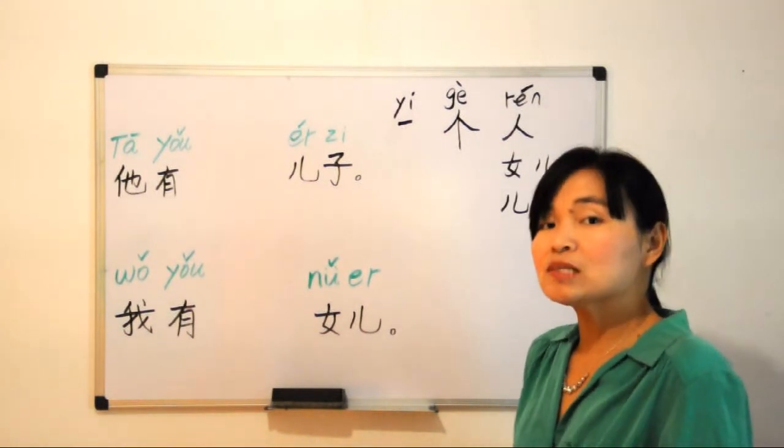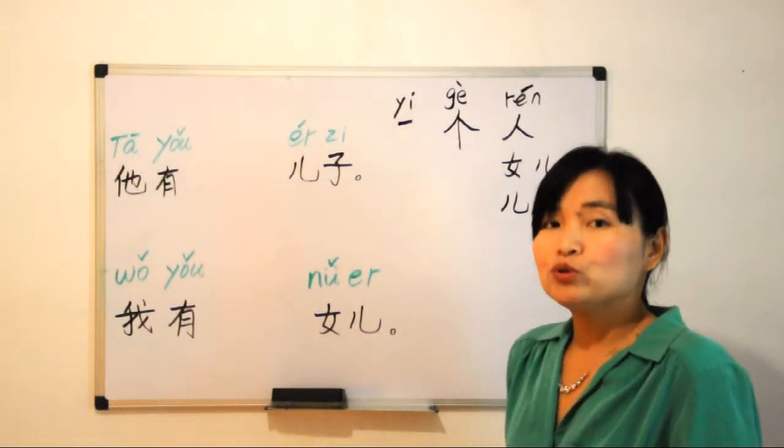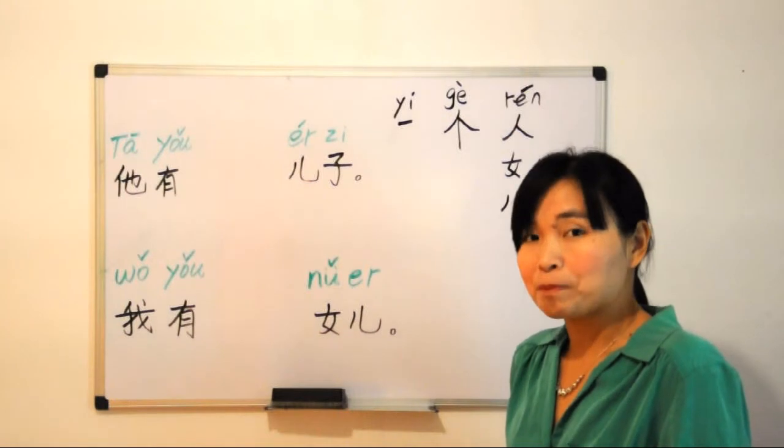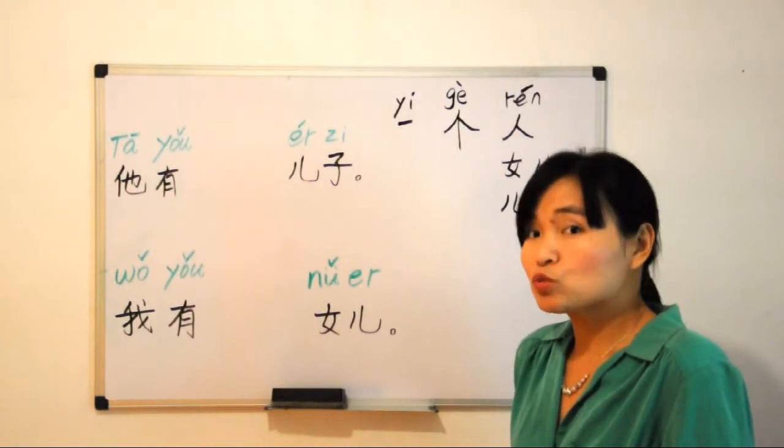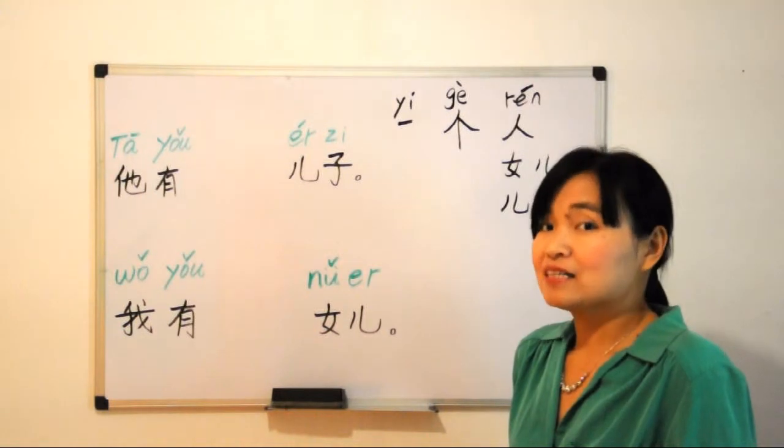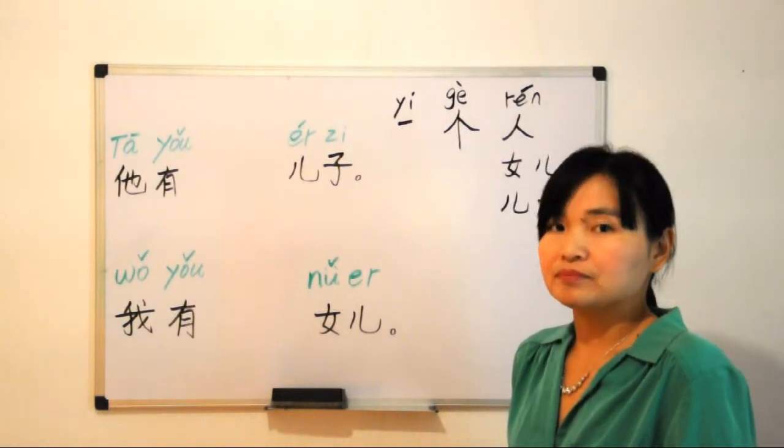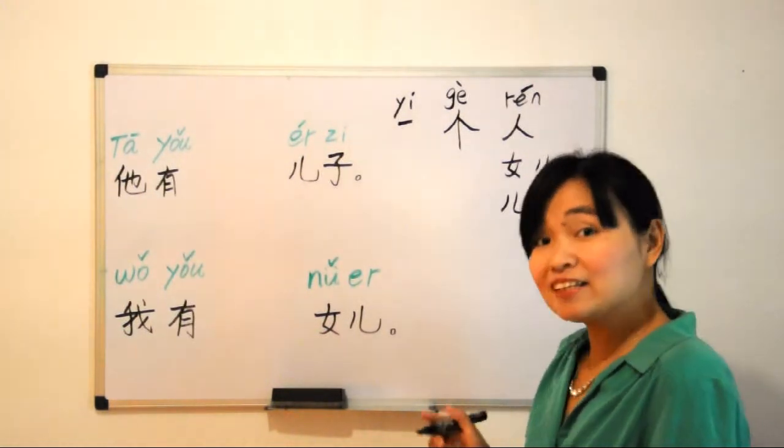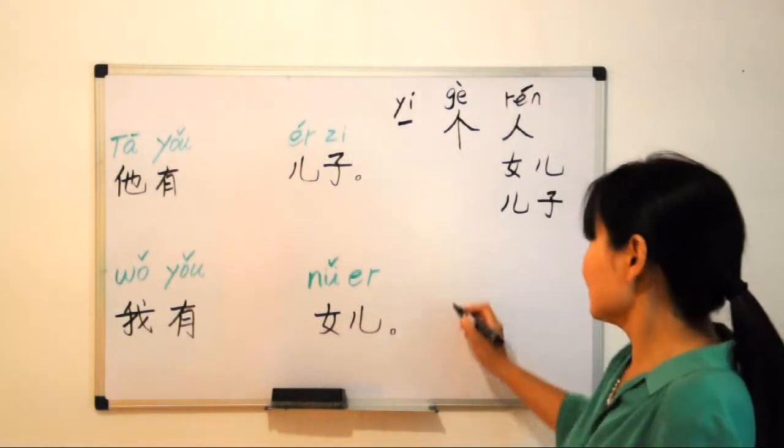So how to say two persons? Normally we use 二 (èr) meaning two, but when it is used with measuring words, we use 两 (liǎng) instead of 二. 两 is a little bit difficult to write. Here, look.